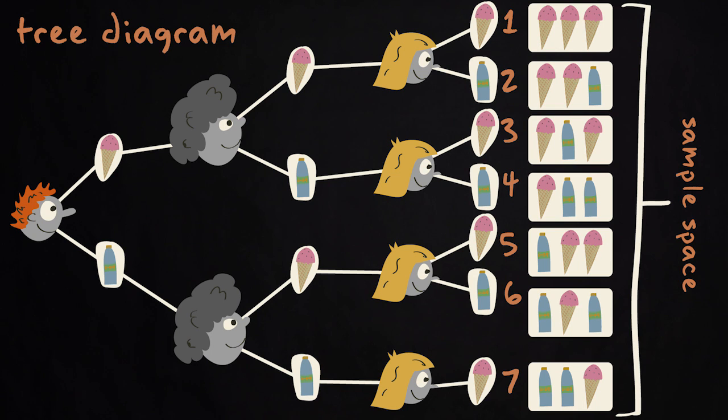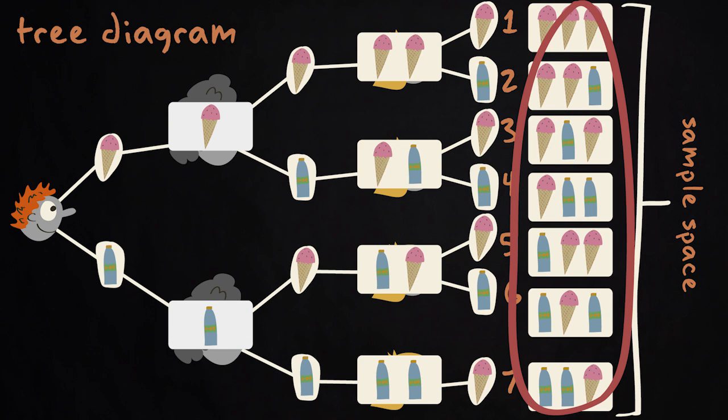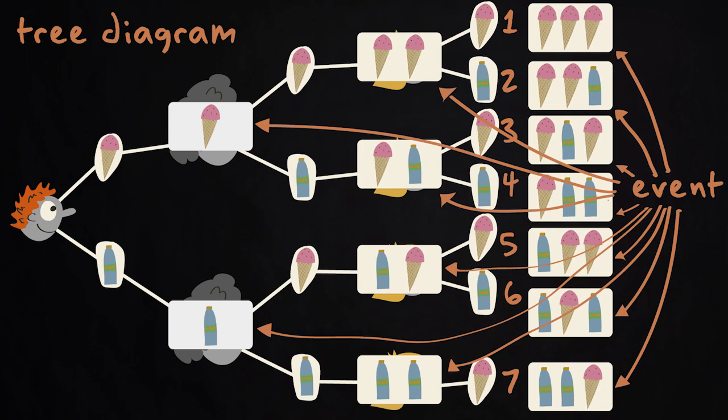In a tree diagram, there are intermediate outcomes at each split, as well as outcomes at the final branch. Any outcome, or a combination of outcomes, is called an event.